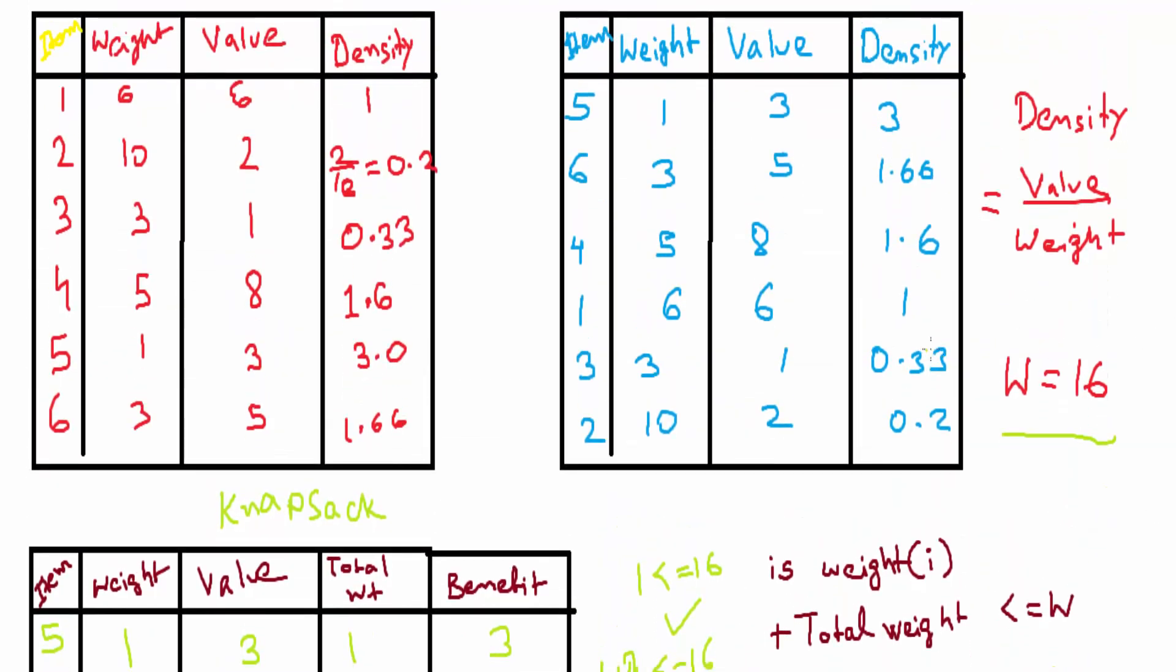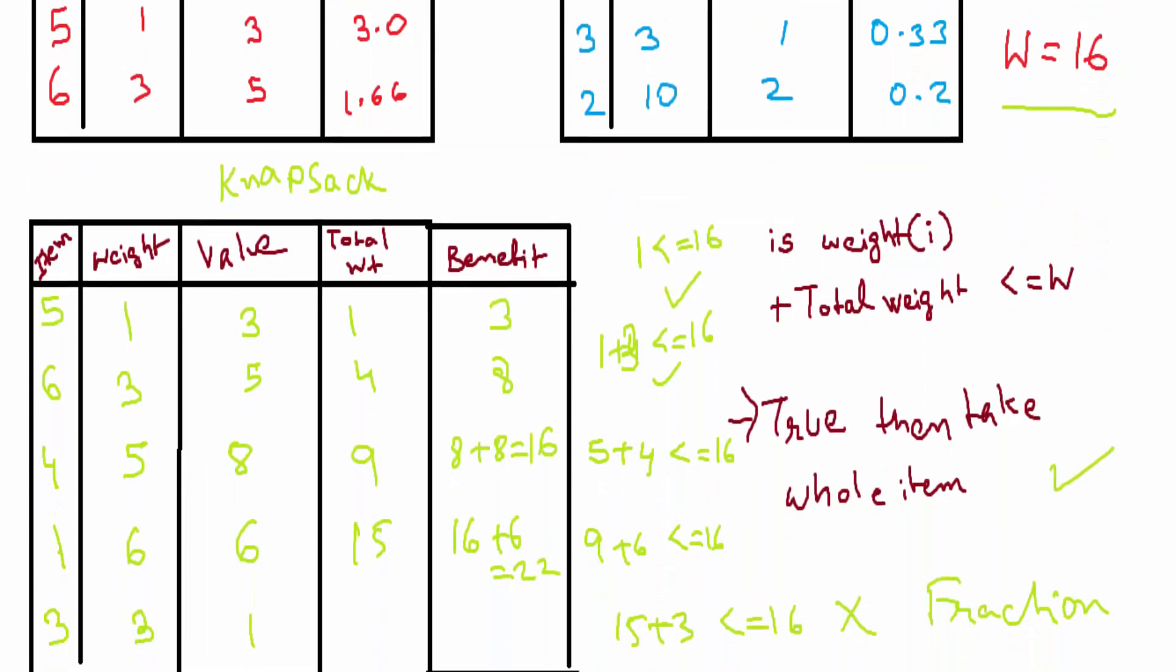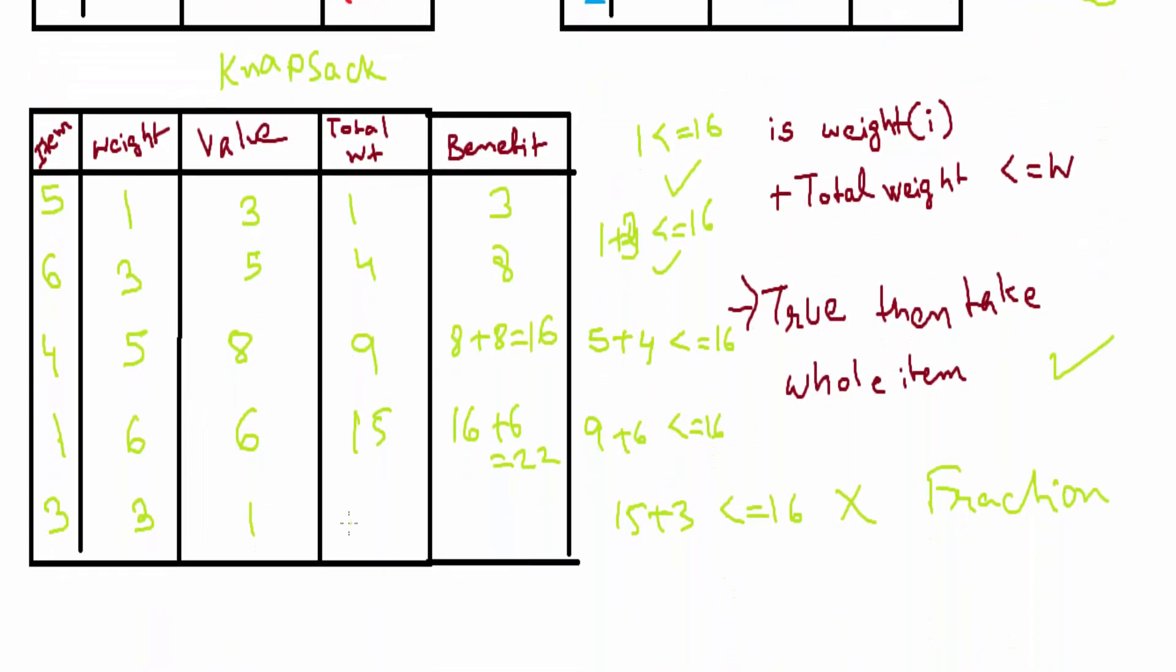We'll multiply this by its weight, the required weight. Required weight is 1. 0.33 multiplied by 1 is 0.33. Its total weight will be 16, because only 1 unit was left. I will add 22 plus 0.33, which is 22.33. This will be our benefit.